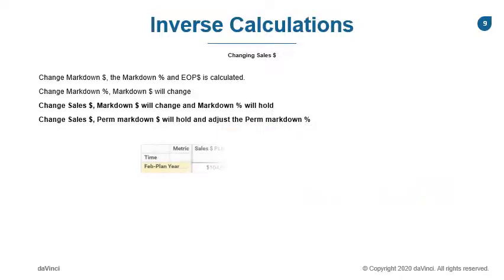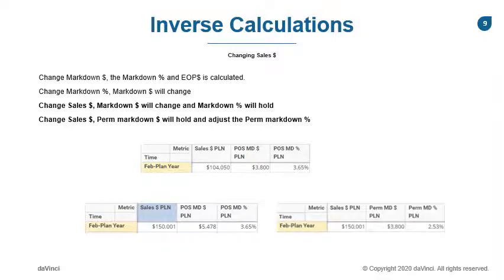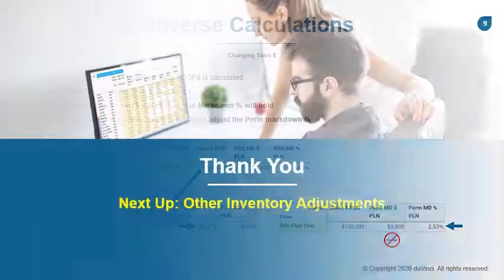Lastly, with the inverse rule calculations, we're going to update our sales. Your POS will respond differently than your permanent markdown, unlike the last two examples. When I update my sales for the POS, my markdown dollars will change, and my rate will hold. This is because of the relationship between POS markdowns and sales. When I update my sales plan with the permanent markdown, my markdown dollars will hold, and my rate will update, due to the relationship with inventory.